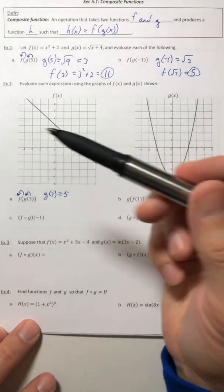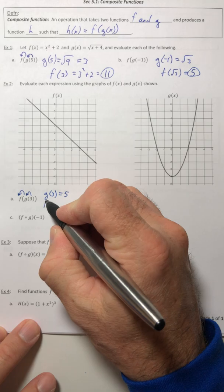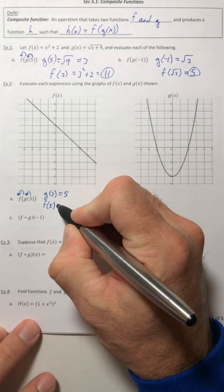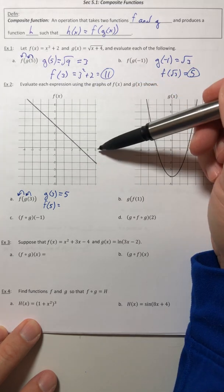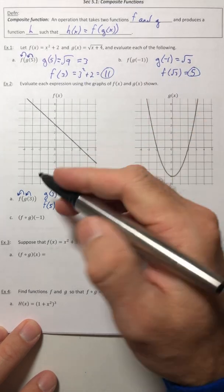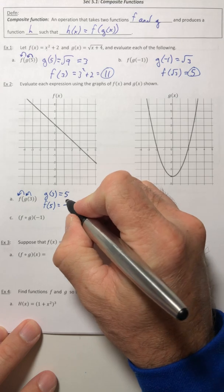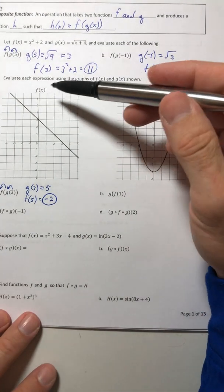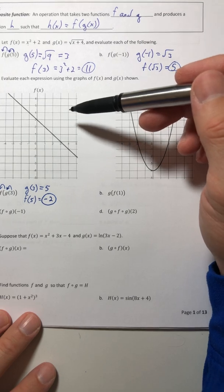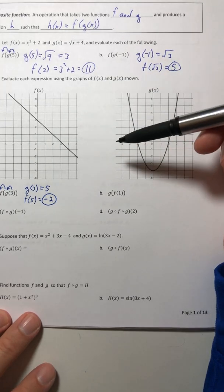Just like you did before, work your way from right to left. Take the five and stick it into the function f. So when x is five, the y value is negative two. The important thing for these is just to make sure you're using the right function at the right time.